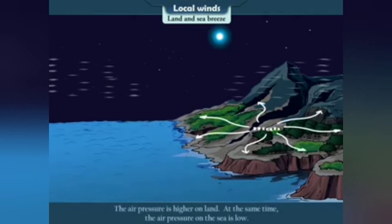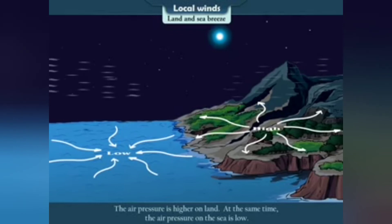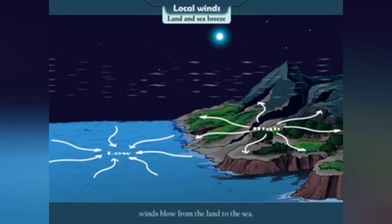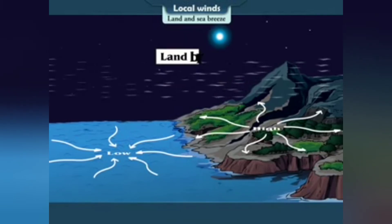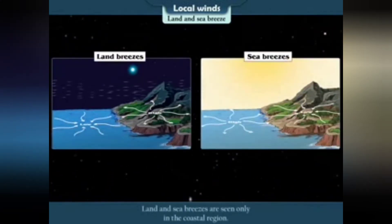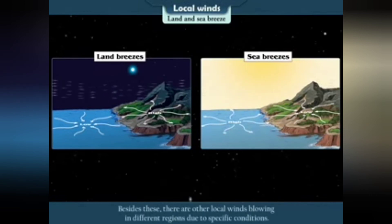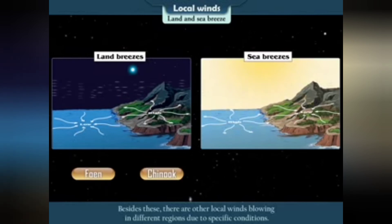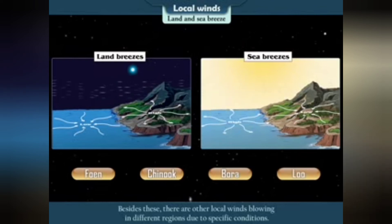At night, the land cools down faster than the sea. The air pressure is higher on land; at the same time the air pressure on the sea is low. Therefore winds blow from the land to the sea. They are called land breezes. Land and sea breezes are seen only in the coastal region. Besides these, there are other local winds blowing in different regions due to specific conditions. Chinook, Bora, and Loo are some examples of such local winds.